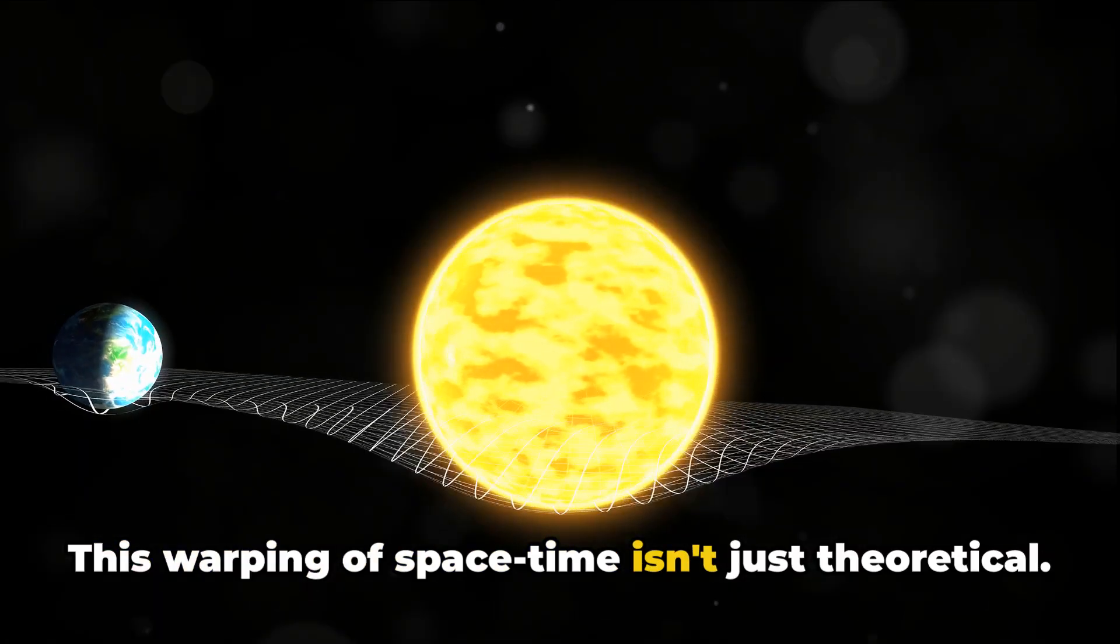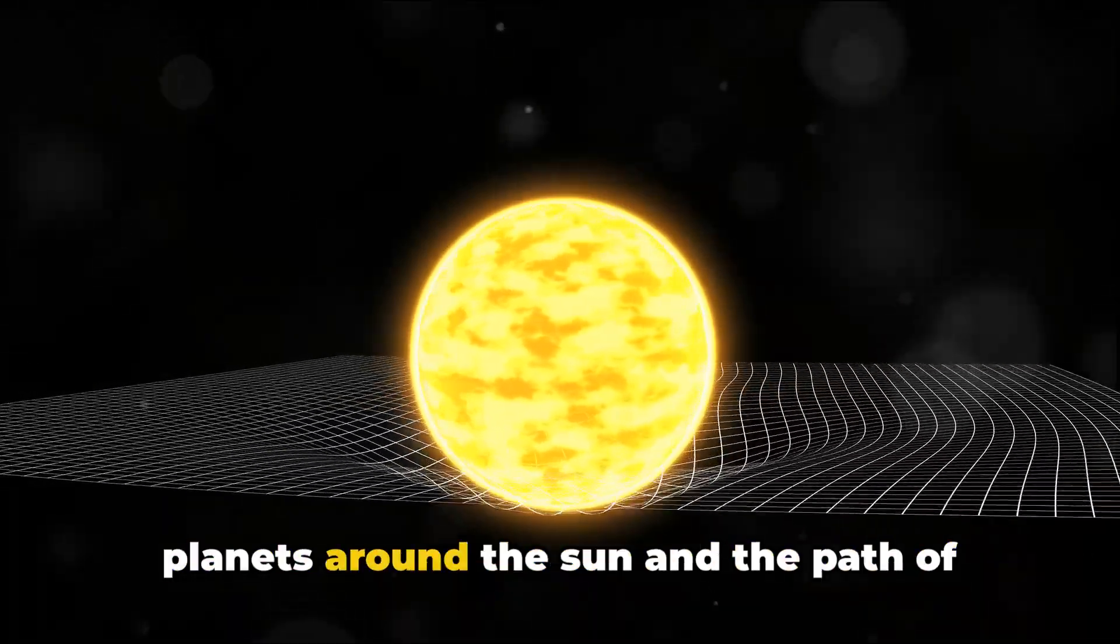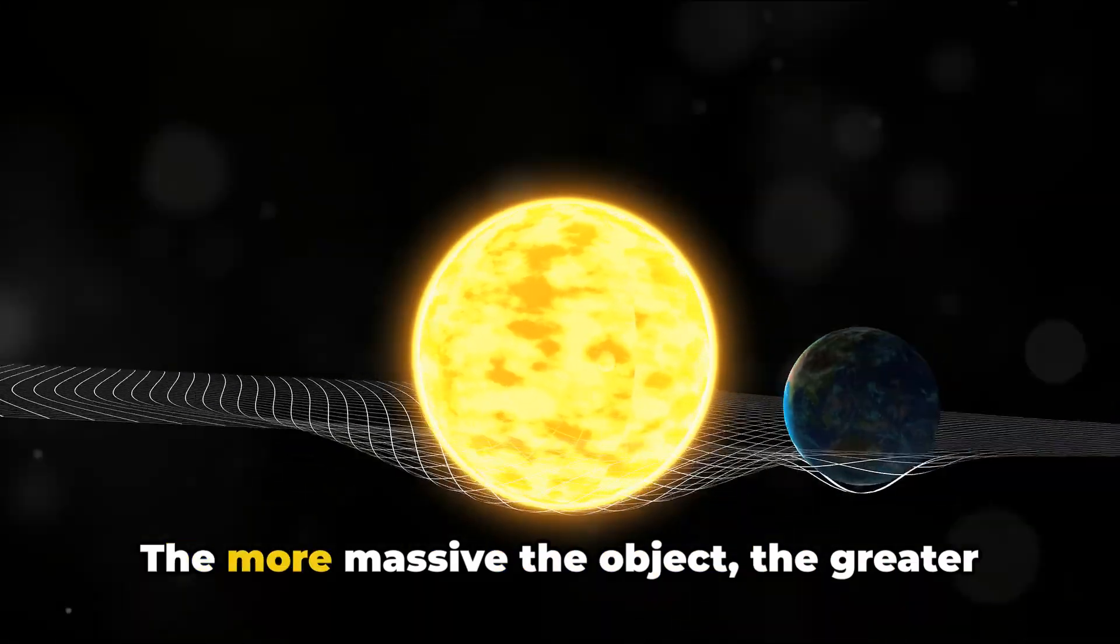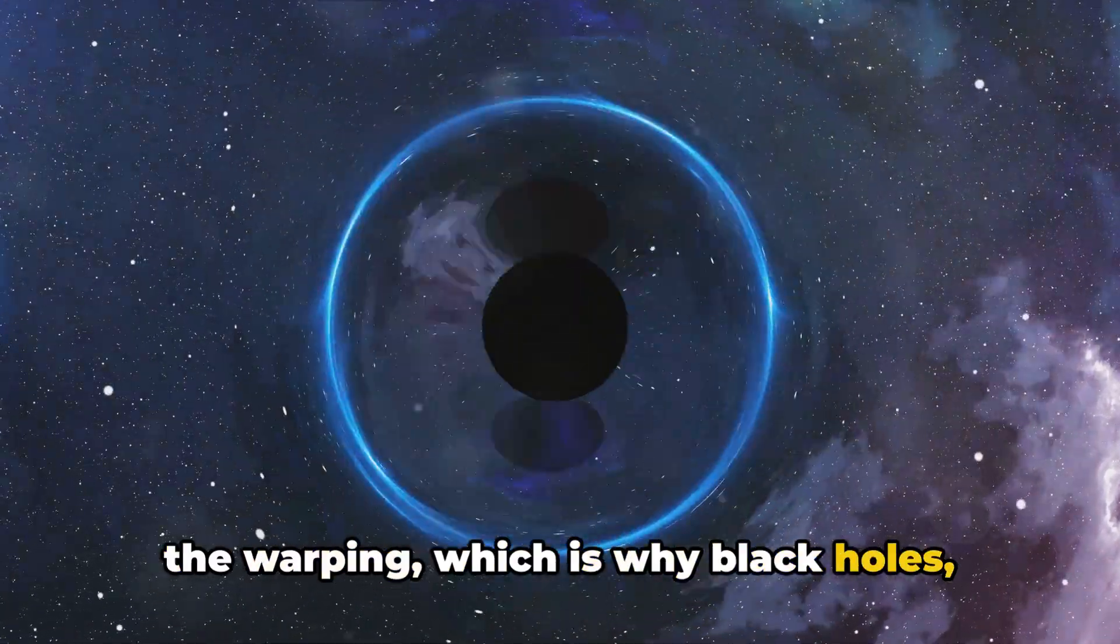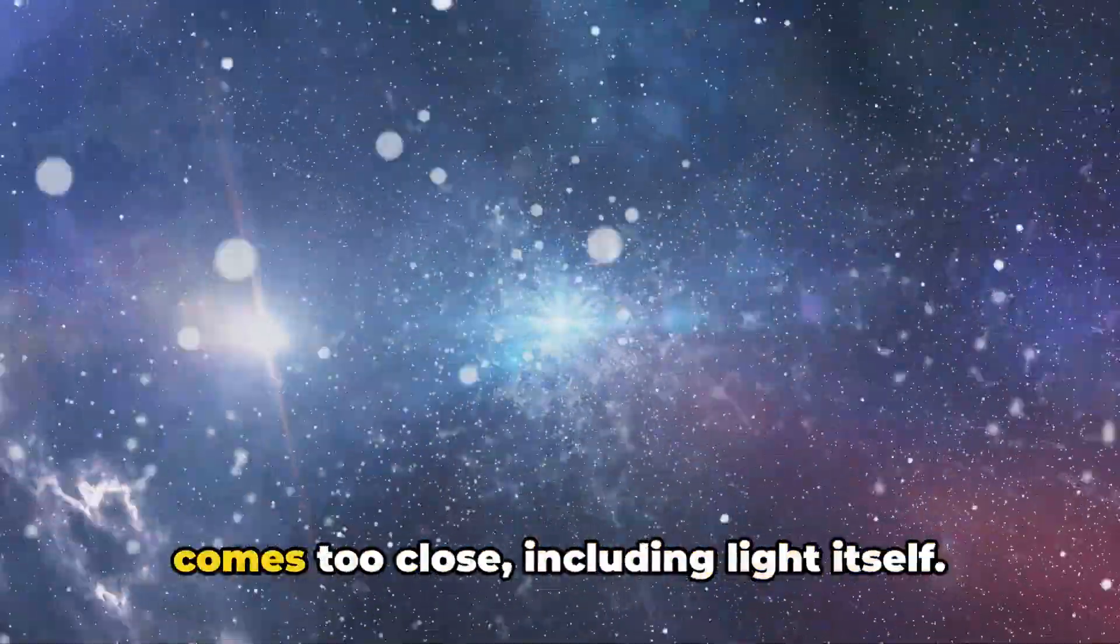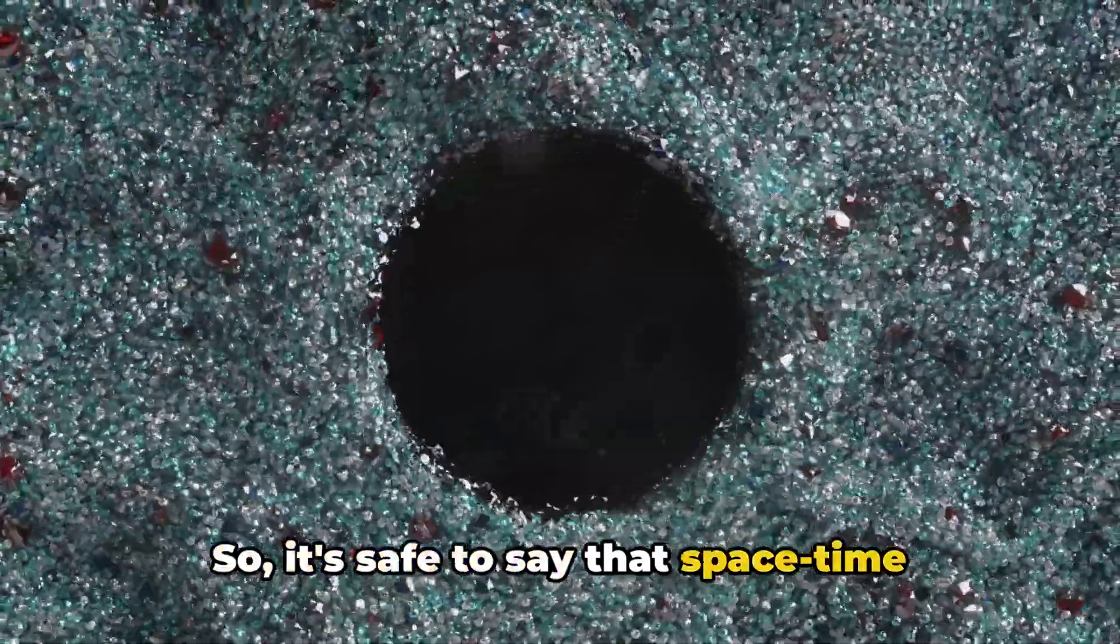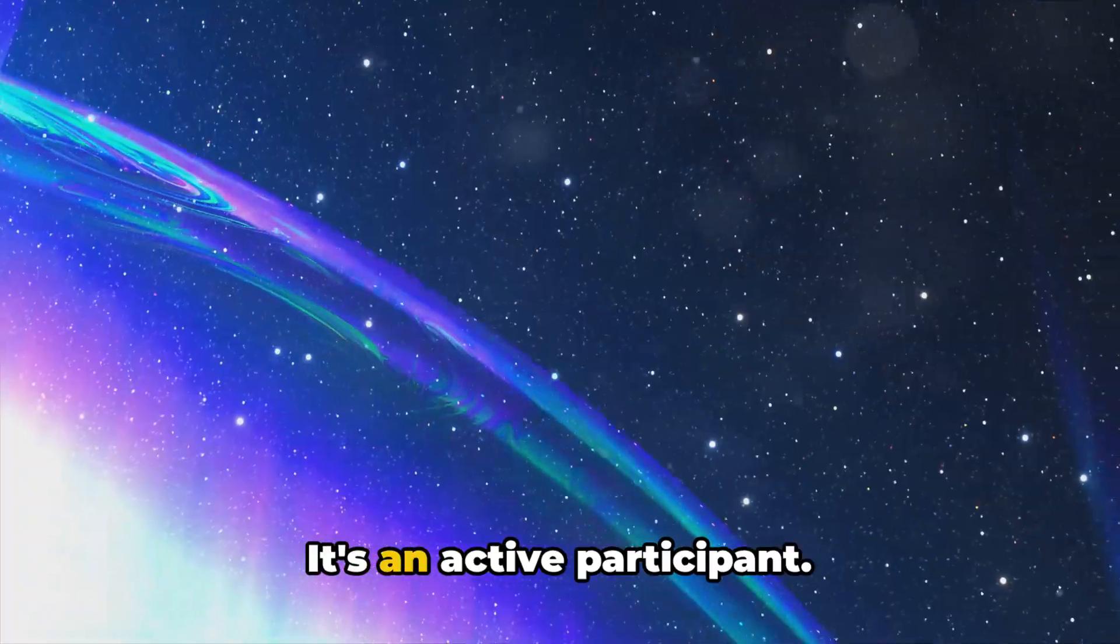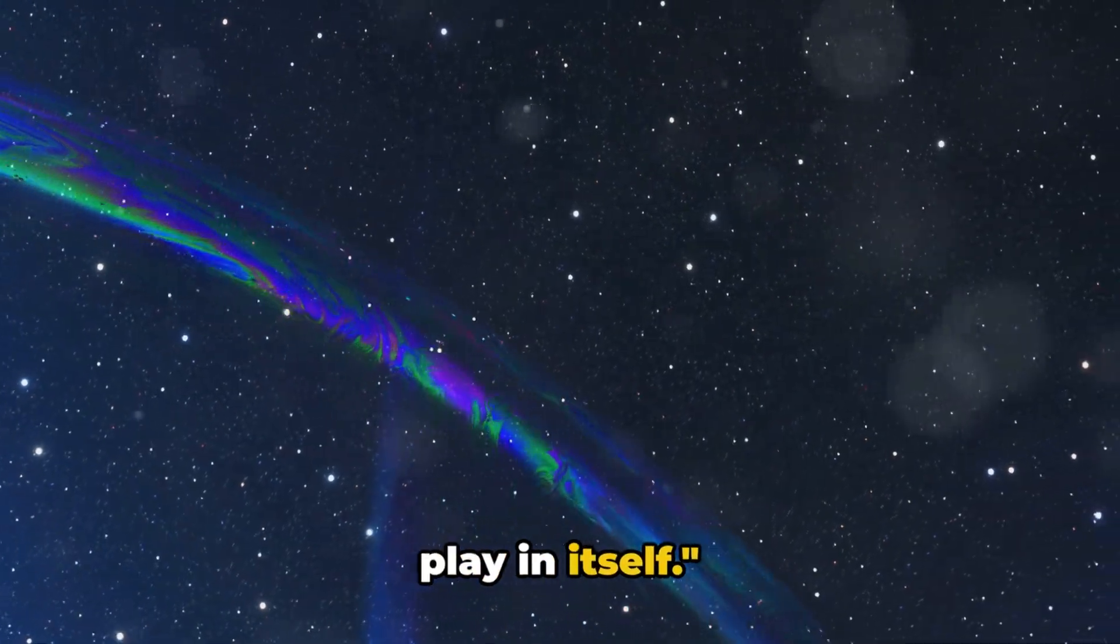This warping of space-time isn't just theoretical. It's been observed, with the orbits of planets around the sun and the path of light bending as it passes near massive objects. The more massive the object, the greater the warping, which is why black holes, with their immense mass compacted into a tiny space, can pull in anything that comes too close, including light itself. So it's safe to say that space-time isn't a passive backdrop to the universe's events. It's an active participant. The universe is not just a stage, it's a play in itself.